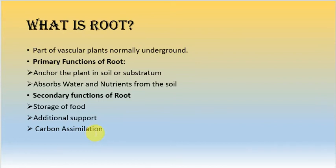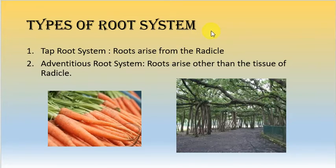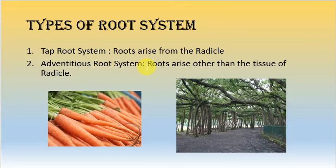Now we will study the different types of root systems. The root system is divided into two main types based on the type of tissue or cell from which it arises. One type is the taproot system, which always arises from the radicle of the embryo. The adventitious root system arises from any tissue other than the radicle.